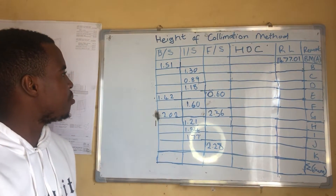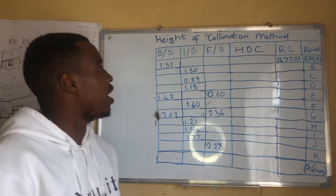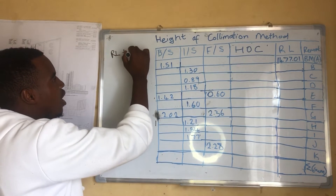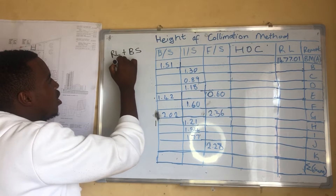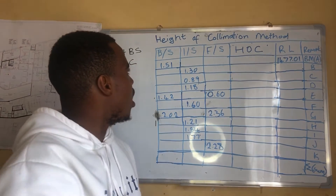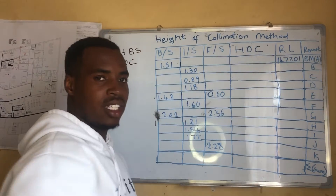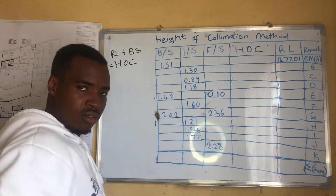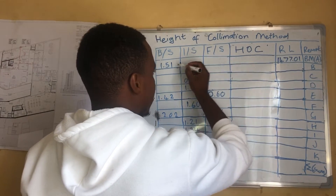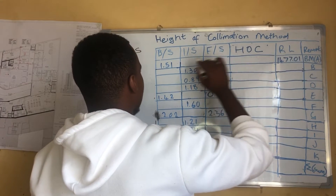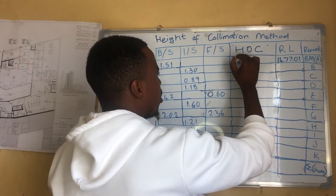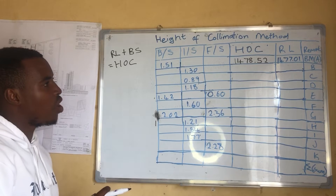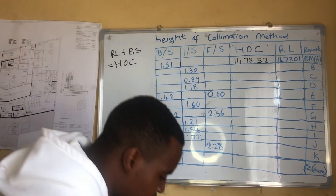Like our last method, we have the Reduced Level and the mark. The first thing we do in the Height of Collimation method is: Reduced Level plus Backsight gives us the Height of Collimation for that position — which in this case is our benchmark, point A. So we are saying 1444.01 plus 1.51, and we get 1478.52, which is our Height of Collimation.